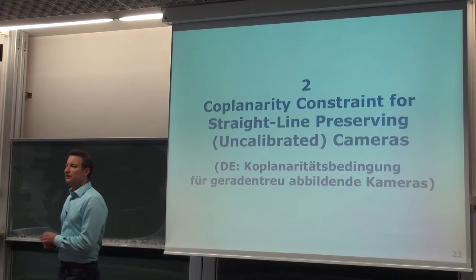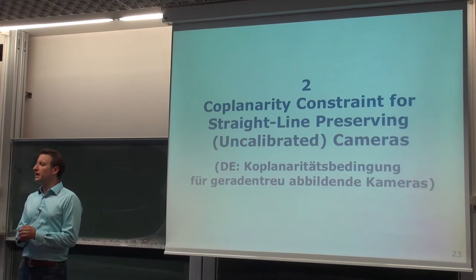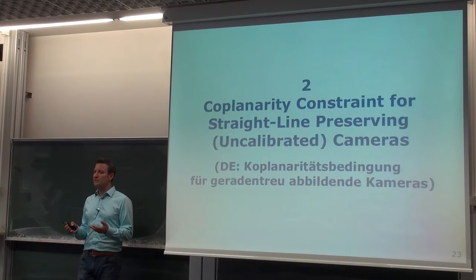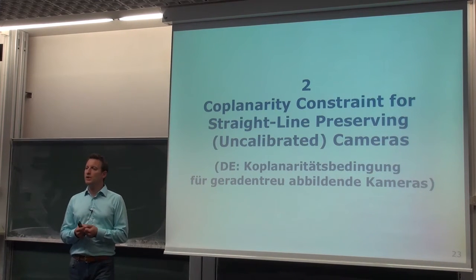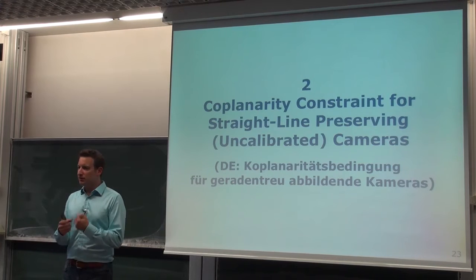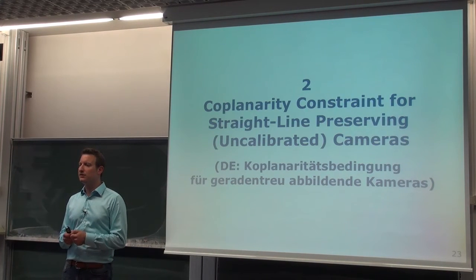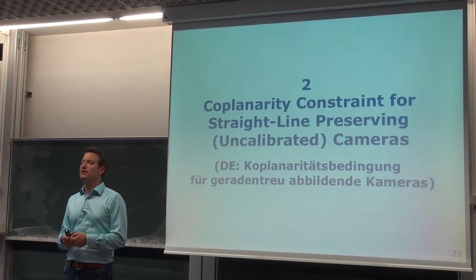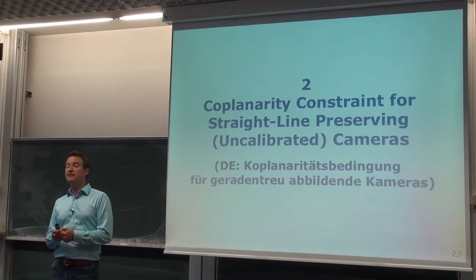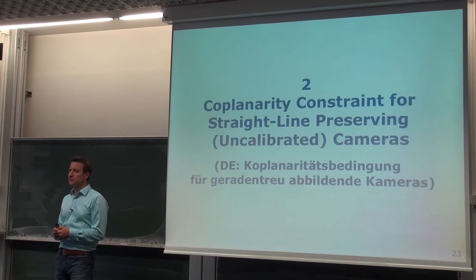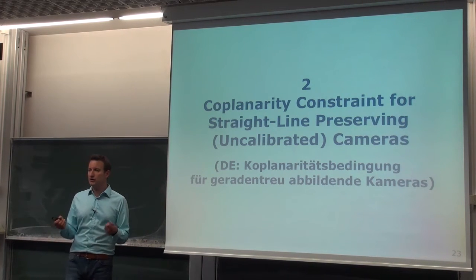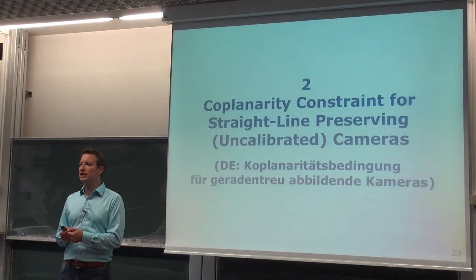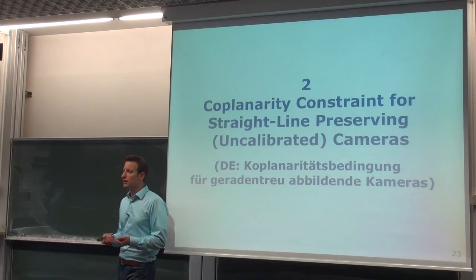The next block we are looking into is the coplanarity constraint. This constraint was very briefly described before. What we want to do is take this constraint, say something about the three vectors involved, and derive a relationship from it. Corresponding points generate constraints, and we want to exploit those constraints in order to estimate the relative information.